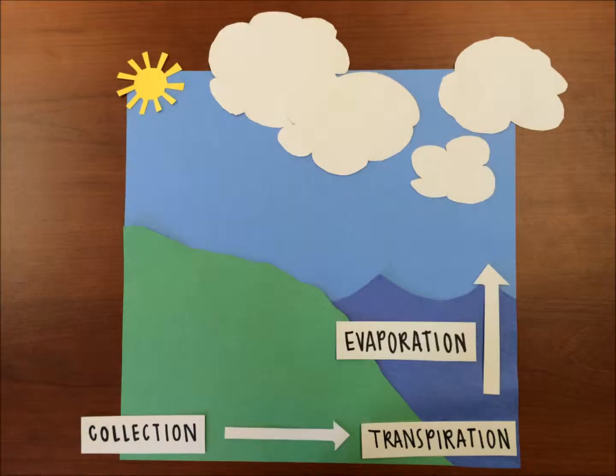The next step is evaporation. Evaporation is when the sun heats up water and turns it into vapor or steam. The water vapor goes into the air and forms clouds.